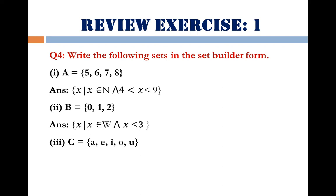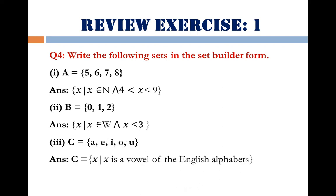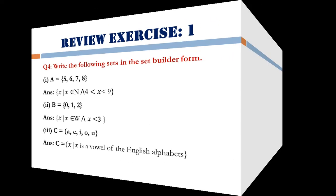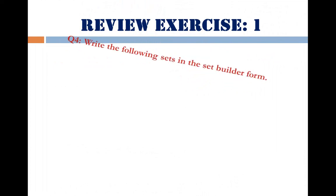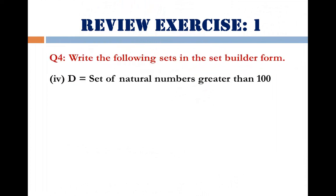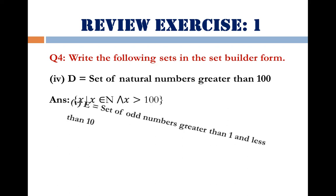Part 3: Set C = {A, E, I, O, U}. I hope you are all familiar with these alphabets. The answer is: C = set of elements x such that x is a vowel of the English alphabet. Part 4: D = set of natural numbers greater than 100. In set builder form: D = {x | x ∈ N and x > 100}. This is easy to understand.